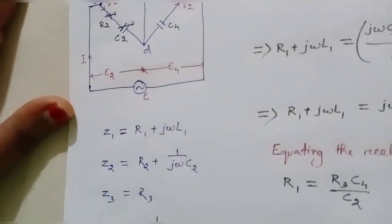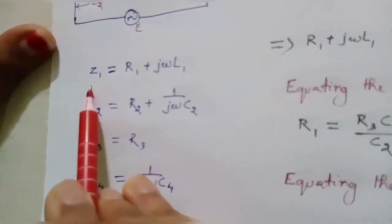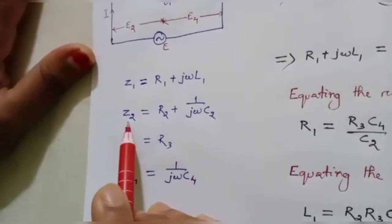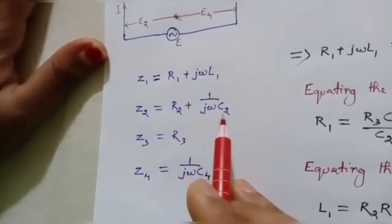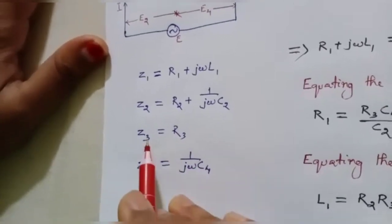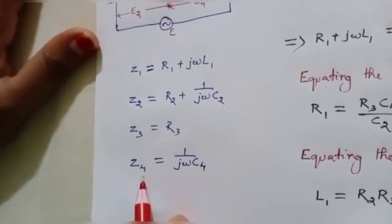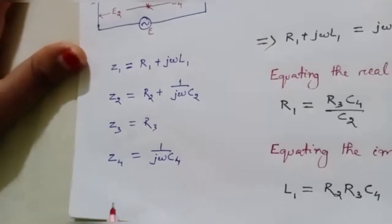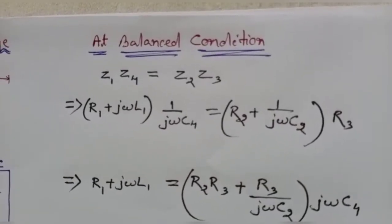Now we need to find out the values of Z1, Z2, Z3, and Z4. Z1 is an RL circuit so Z1 equals R1 plus j·ω·L1. Branch 2 is a series RC circuit so Z2 equals R2 plus 1/(j·ω·C2). Branch 3 is a simple resistive branch so Z3 equals R3. Branch 4 is a pure capacitive branch so Z4 equals 1/(j·ω·C4). We need to find the unknown parameters R1 and L1.